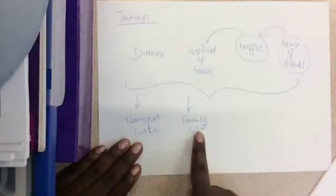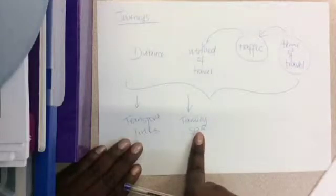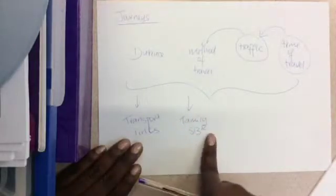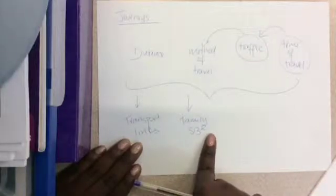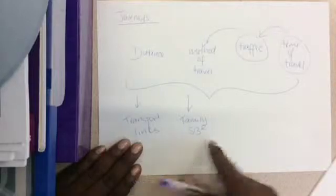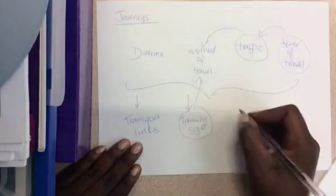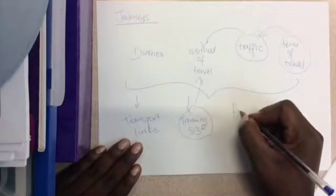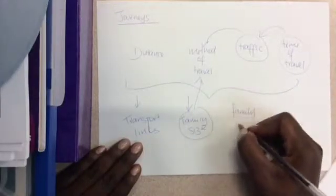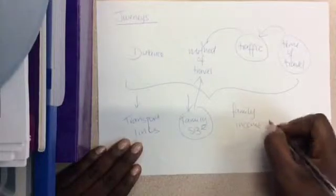Another example is family size. For example, if you have a big family, there's a possibility that the parents might have invested in a car to travel everyone around, in which case maybe you're more likely that might have an effect on the method of travel. Another example is family income.